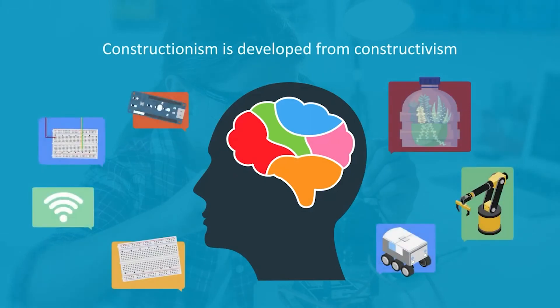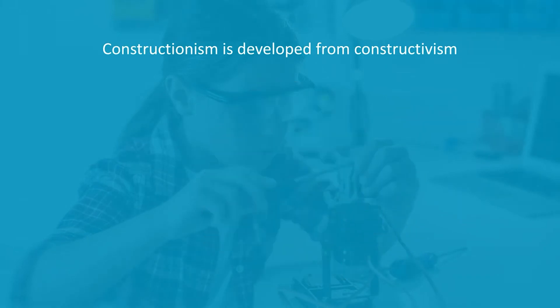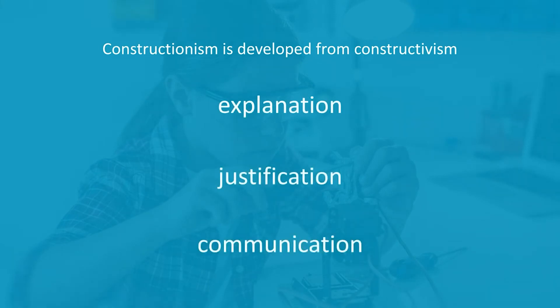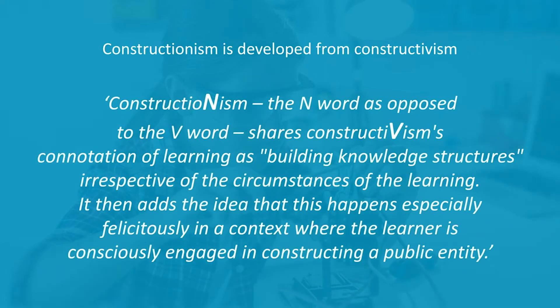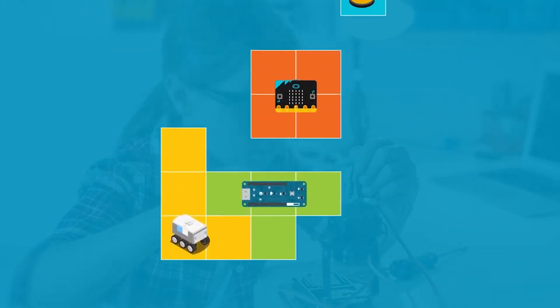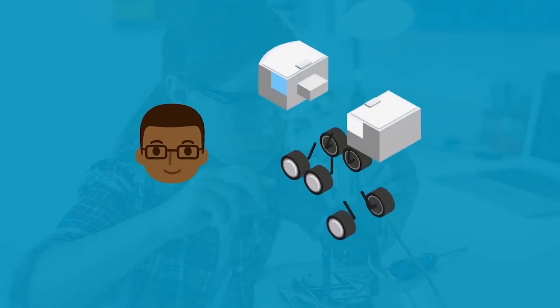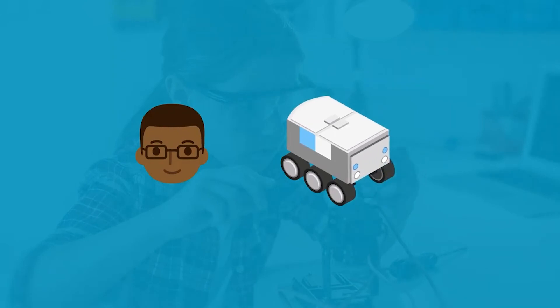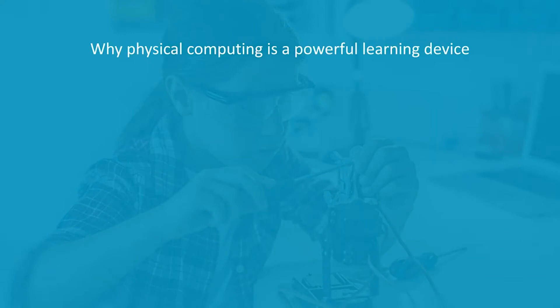And at the heart of constructionism is the orthodoxy of constructivism. Constructionism has its roots firmly in the constructivist idea that learning is a construction of ideas in the brain, but with strong elements of a socially constructed understanding established through explanation, justification, and communication. In Seymour Papert's own words: 'Constructionism — the N-word as opposed to the B-word — shares constructivism's connotation of learning as building knowledge structures, irrespective of the circumstances of the learning. It then adds the idea that this happens especially felicitously in a context where the learner is consciously engaged in constructing a public entity.' The activity of physically manipulating devices develops active engagement in the learning process, and supports Papert's ideas of constructing knowledge through constructing things.